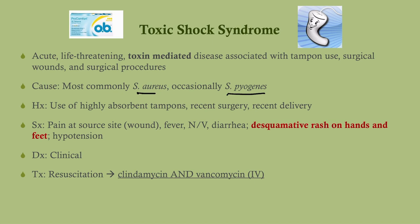They're going to be pretty straightforward. The symptoms are pain at the source site, fever, nausea, vomiting, diarrhea — very nonspecific — but the giveaway is this desquamative rash that tends to be on the hands and feet. The diagnosis is clinical; this is an emergency so we don't wait for labs. Treatment is resuscitation — fluids and pressors to get that blood pressure up and perfuse the brain. Once you suspect toxic shock syndrome, do not wait: give clindamycin and vancomycin. Clindamycin stops toxin formation.